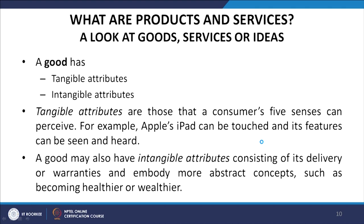A good has both tangible and intangible attributes. Tangible attributes are those that a consumer's five senses can perceive — for example, Apple's iPad can be touched and its features can be seen and heard. A good may also have intangible attributes consisting of its delivery or warranties, embodying more abstract concepts such as becoming healthier or wealthier.